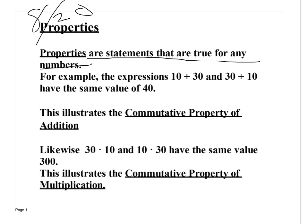Commutative property of addition says we can change the order of an addition problem and it does not change our answer. Same thing for multiplication: 30 times 10 and 10 times 30 both give you 300. Here's how you can memorize and identify commutative property — we're changing the order of the numbers.